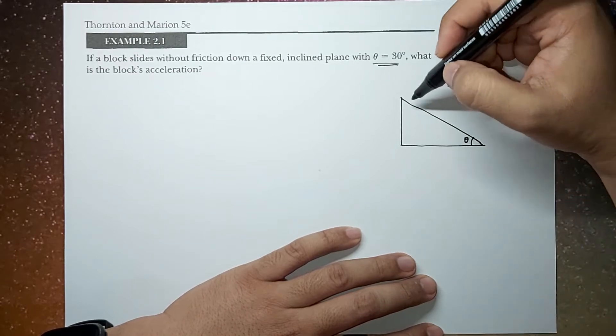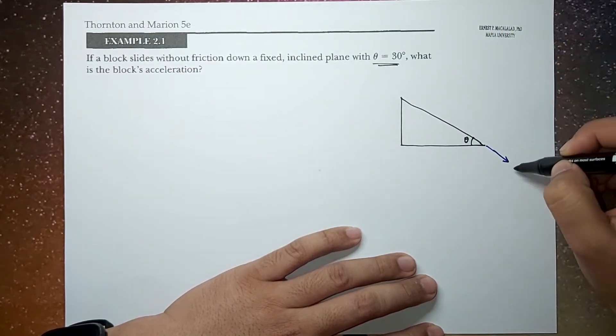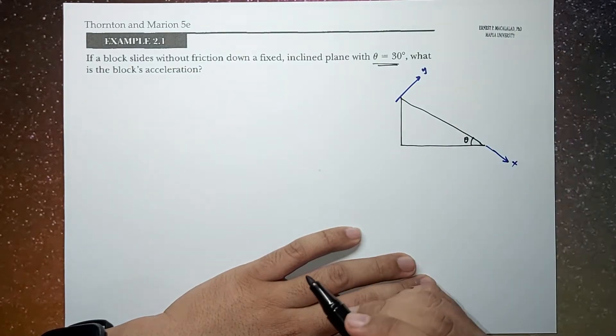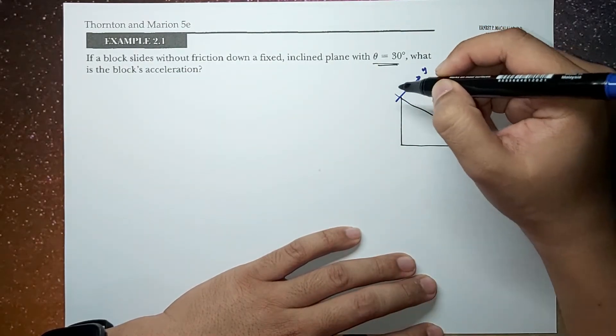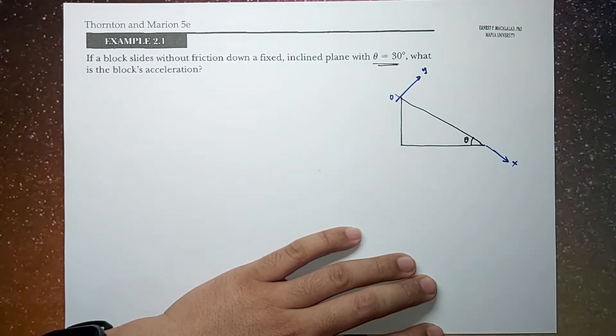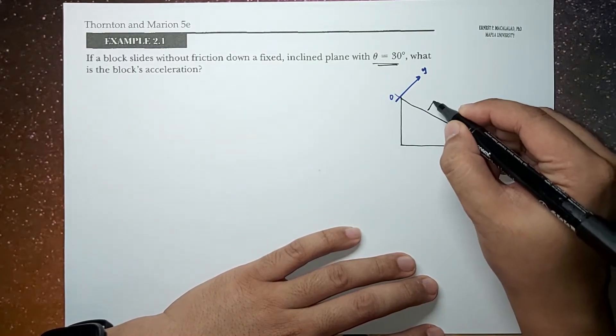So if this is your x-direction, let's set this to be as our y-direction. So it's more convenient to align your coordinate axis along the inclined plane so that some of the forces will be along those directions. So if this is the block,